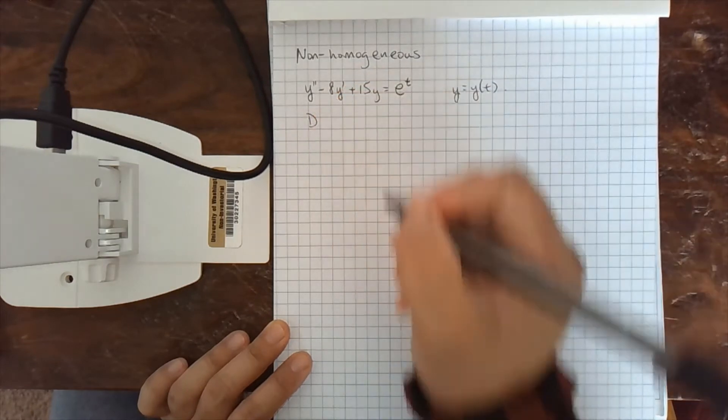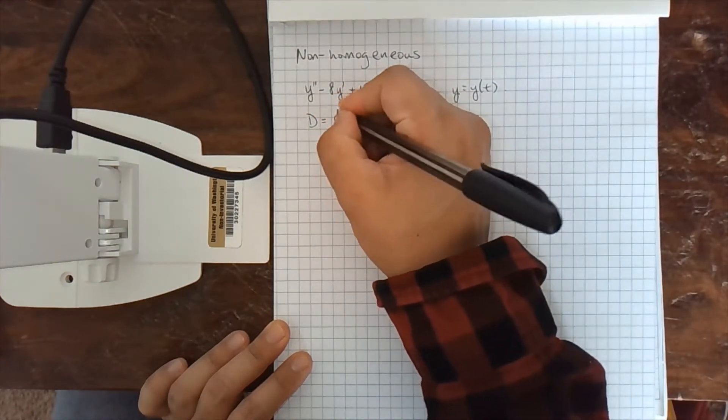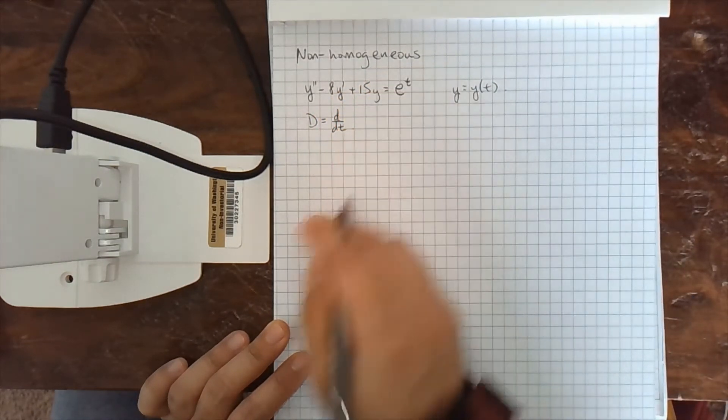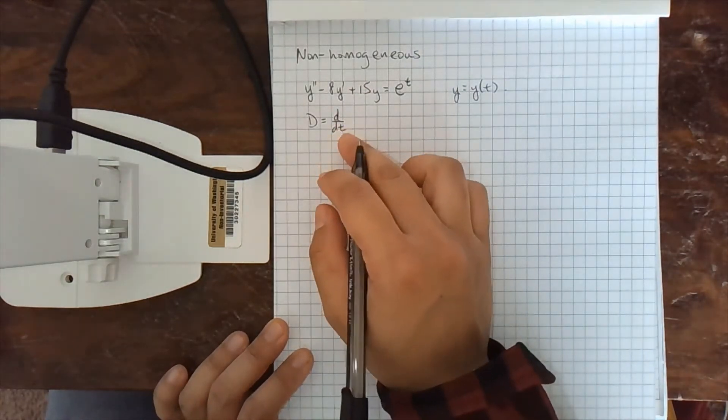So using the same technique as the previous video, we're going to set a linear differential operator, a simple operator, d by dt.